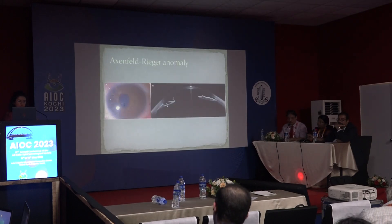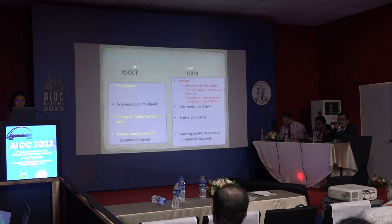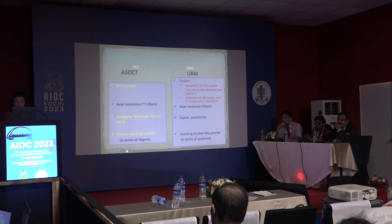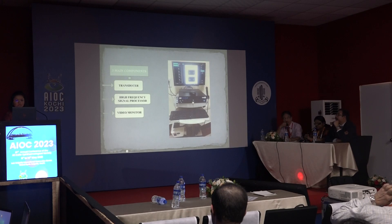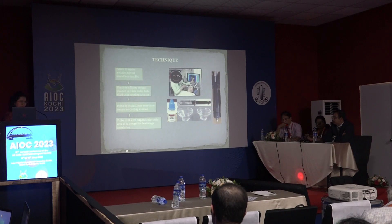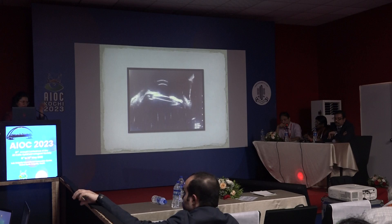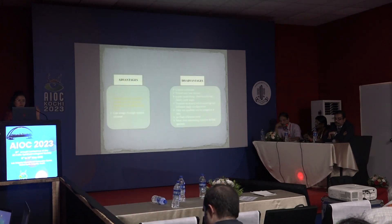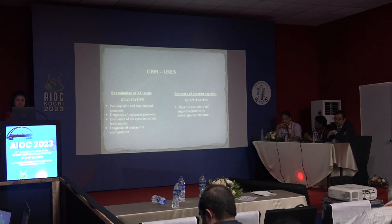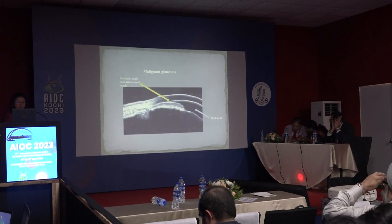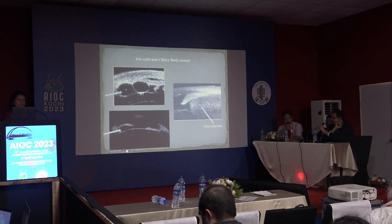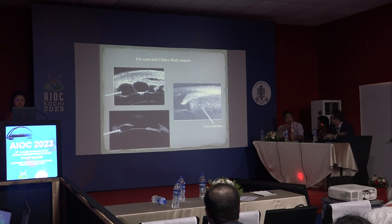Moving on to UBM: ASOCT is a non-contact procedure with a 90-degree patient setup and precise scanning location, whereas UBM is a contact procedure. The machine has a computer setup with a probe; after anesthetizing the patient, who lies supine, fluid-filled cups are placed and the probes — 25 MHz and 50 MHz — are used. For angle visualization, 50 MHz is used, but only one quadrant of the angle can be seen at a time, not 360 degrees. The major advantage of UBM is visualization of structures posterior to the iris pigment epithelium, including the ciliary body, which cannot be done with ASOCT. Similar to ASOCT, it provides qualitative and quantitative estimation. Ciliary body cysts, iris cysts, and ciliary body tumors are best visualized with UBM.